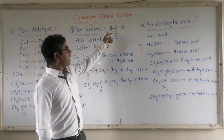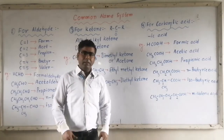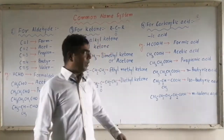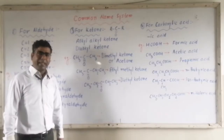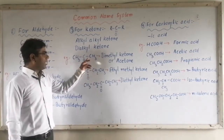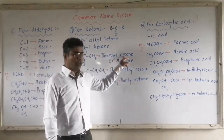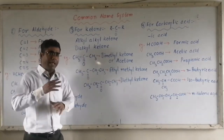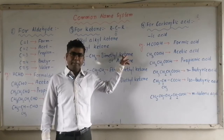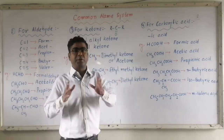If both the R groups are the same — the R groups provided are similar — then the ketone is named as dialkyl ketone. For example, the simplest member having three carbon atoms: CH3-CO-CH3. As both R groups are the same methyl group, this compound is named 'dimethyl ketone.' Methyl repeated two times becomes 'dimethyl,' and for the C=O group we use 'ketone.' So its common name is 'dimethyl ketone.' It is also called acetone — the nail polish remover thinner.